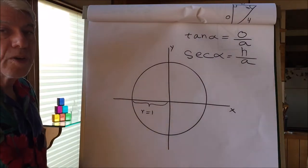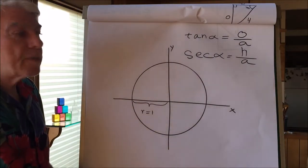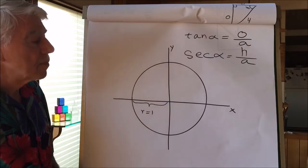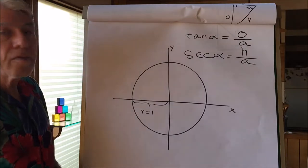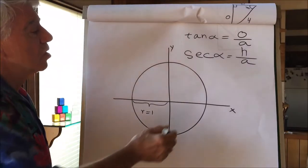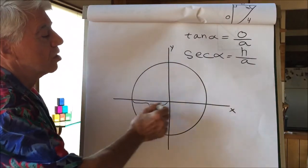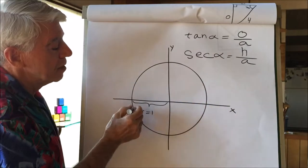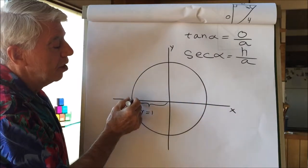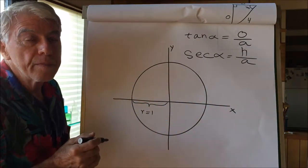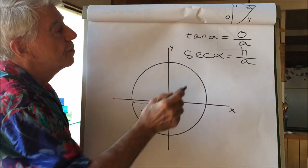Hello, my name is Ed Hughes, and let me show you why I love the unit circle. What's a unit circle? There's a circle, an x-axis, a y-axis, and the radius is equal to 1. Let's get started.